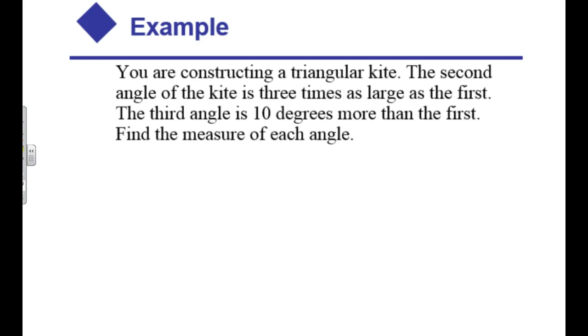If you're constructing a triangular kite, so I'm going to draw a triangle, but I'm not going to worry about what that triangle looks like. It could be anything. So I'll draw a triangular kite. I'm going to label some things. The second angle of the kite is three times as large as the first. Well, if the first one is x, then this will be three times that of x, 3x.